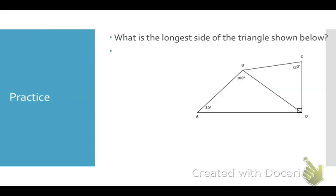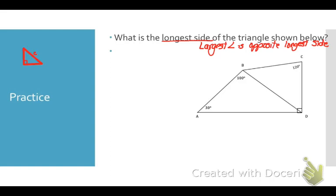Put a star by this last one — you'll see it on your unit test. What is the longest side of the triangle shown? The longest side is always opposite the largest angle, but be careful: this is only true within one triangle. If you have a small right triangle with side C and a large right triangle with side D, both have 90-degree angles but the opposite sides are not the same length. So it only applies within a single triangle.